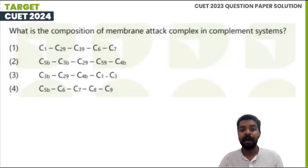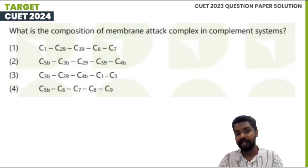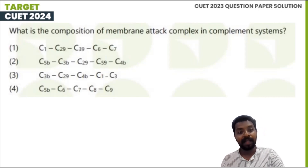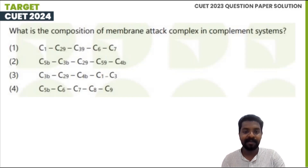What is the composition of membrane attack complexes in the complement system? Looking at the complement system components: the options include C1, C2, C3, C6, C7; or C5b, C3b, C2, C5, C4b; or C3b, C2, C4b, C1, C3; or C5b, C6, C7, C8, C9. The correct composition of the membrane attack complex is C5b, C6, C7, C8, C9.